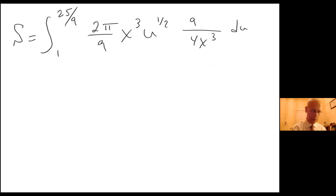And so x cubed cancels x cubed and this 9 cancels this 9. So I'm left with S equals, and I can actually cancel this 2 with this 4. There's a 2 in here, so I have π over 2 integral from 1 to 25 over 9, u to the one half du.